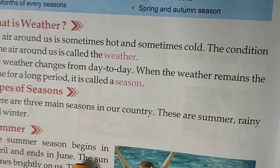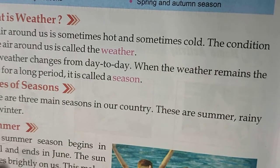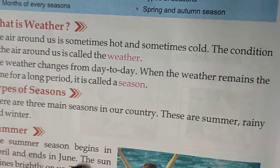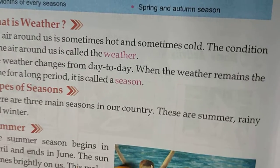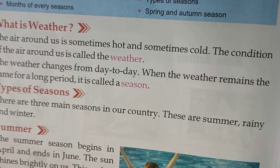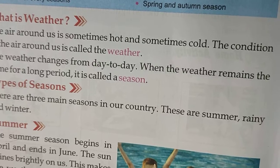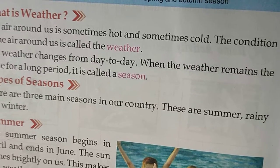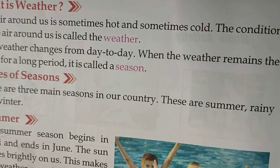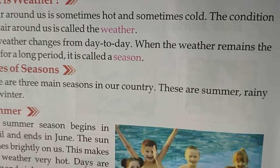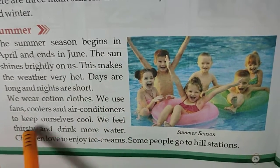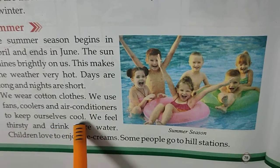Summer: The summer season begins in April and ends in June — April, May, June. The sun shines brightly on us, which makes the weather very hot. Days are long and nights are short. We wear cotton clothes and use fans, coolers, and air conditioners to keep ourselves cool.